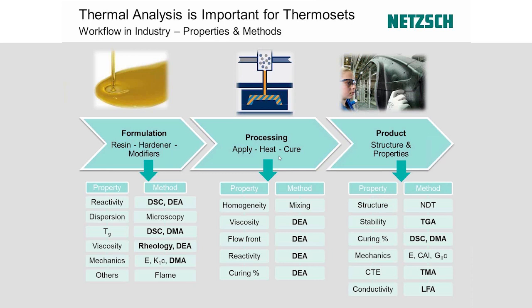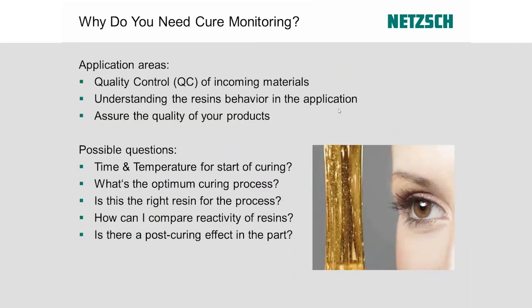Classical lab-scale characterization technologies cannot be applied during processing — except DEA. DEA has its strength both in the lab, characterizing neat resins, and in processing, where specific sensors monitor viscosity, flow front, infusion processes, reactivity, and degree of curing. On the final cured part, DEA is less strong, though it can characterize glass transition; DSC, DMA, and laser flash analysis are more suitable there.